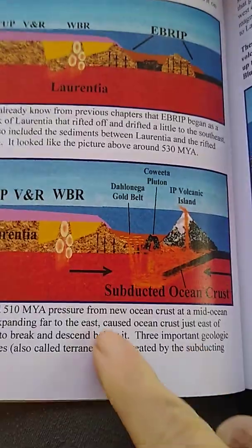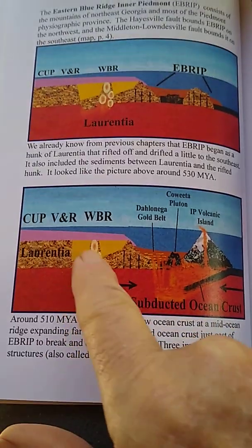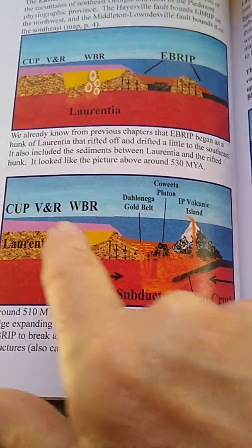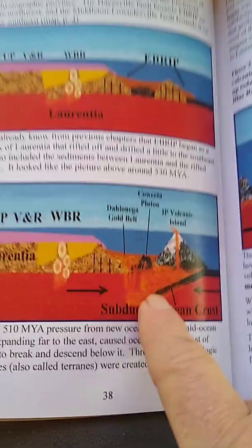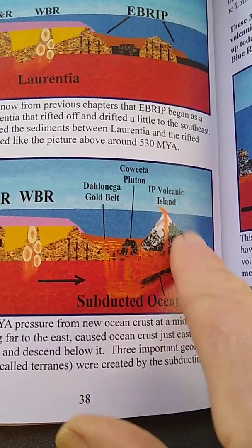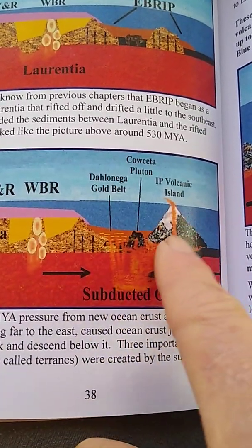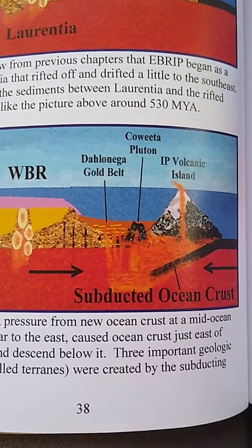Let me show you a nicer picture of this from the side view from the book 'The Rocks of Georgia,' which you can get on Amazon. Here's the continent, and here are the western Blue Ridge rift grabens — the Great Smoky Mountains rift grabens. This is the Cambrian explosion limestone that covered it all. The rifted hunk was here with subducting ocean crust going down, turning the rifted hunk into a volcanic island arc and pumping gold into the sediments between the rifted hunk and the mainland.